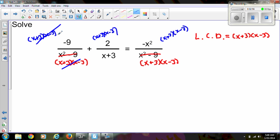And I'm left simply with a negative 9 plus, same thing here, the x plus 3 divides out with the x plus 3 and I'm left with 2 times the x minus 3. Bring down my equal sign and all those divide out and I'm simply left with a negative x squared.